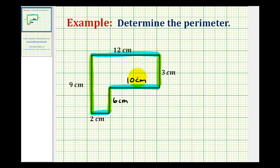Now that we have the length of each side, we just need to find the sum of these lengths to determine the perimeter of this polygon. So starting with this side here, let's go ahead and mark it so we don't forget where we started. We'll have 12 centimeters plus 3 centimeters plus 10 centimeters plus 6 centimeters plus 2 centimeters.